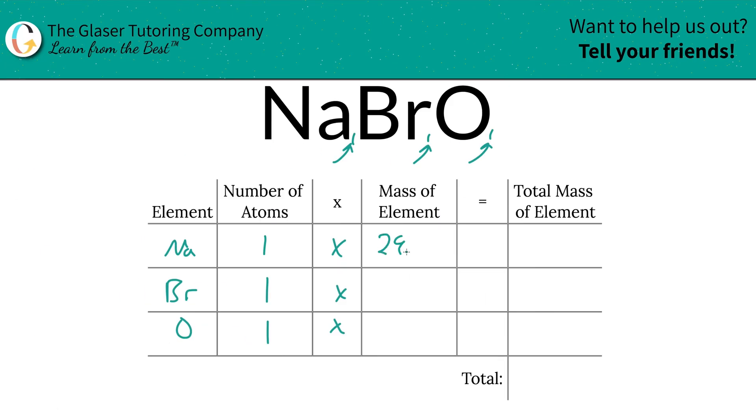So those are the masses we are going to write down. So this is 22.99. Bromine is going to be 79.90. And then oxygen was 16, right?